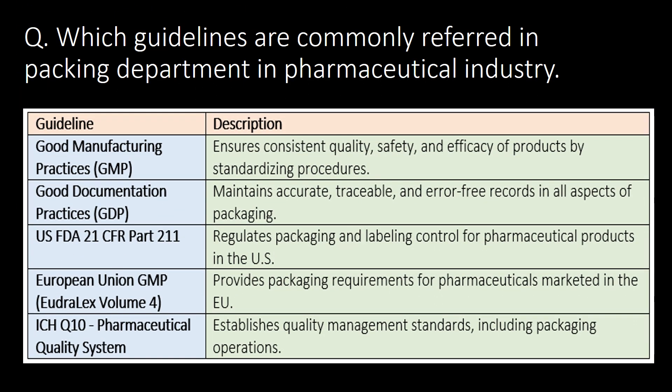Which guidelines are commonly referred to in the packing department in the pharmaceutical industry? Good Manufacturing Practices (GMP), Good Documentation Practices (GDP), USFDA 21 CFR Part 211, European Union GMP Eudralex Volume 4, and ICH Q10 Pharmaceutical Quality System are the commonly referred guidelines in the pharmaceutical industry for the packing department.